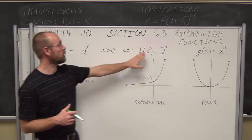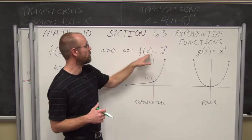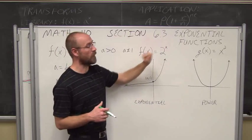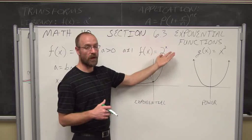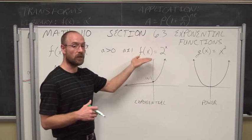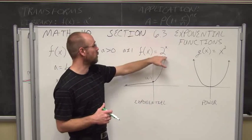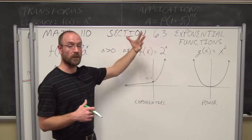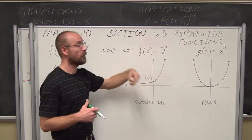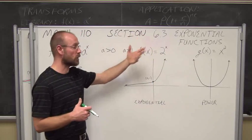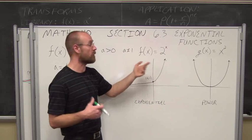Let's look at this example: an exponential function where f of x equals 2 to the x. Essentially, for every value of x, this is going to increase by a factor of 2 — it's going to double. So if x is 1, we have 2. If we double that when x is 2, we have 2 to the second, which is 4, then 8, 16, 32, and so on. It doubles each time by a factor of 2.